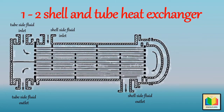Now let's see what is meant by 1-2 shell and tube heat exchanger. The first number, that is 1, stands for a shell side pass. And the second number, that is 2, stands for a tube side pass.